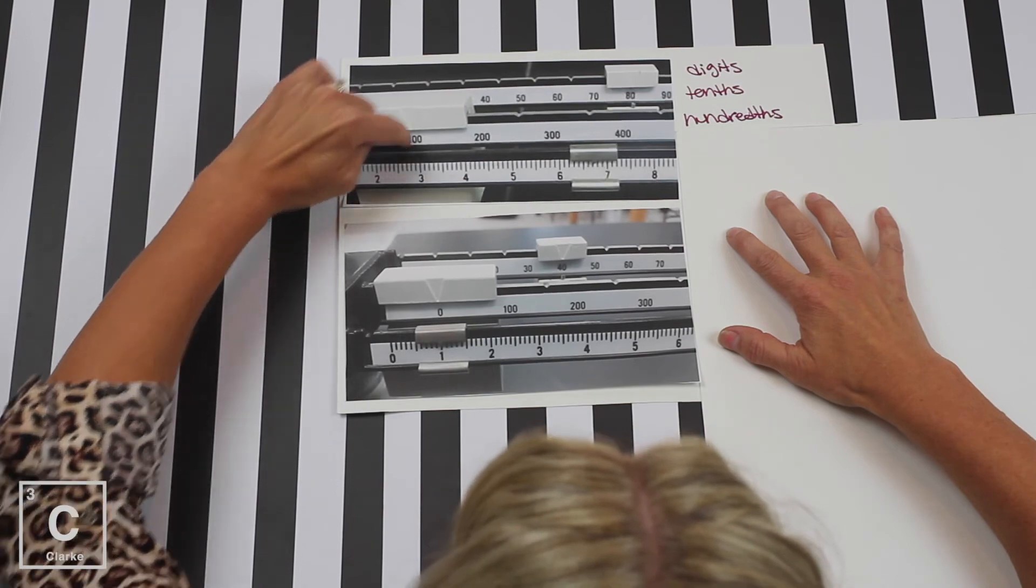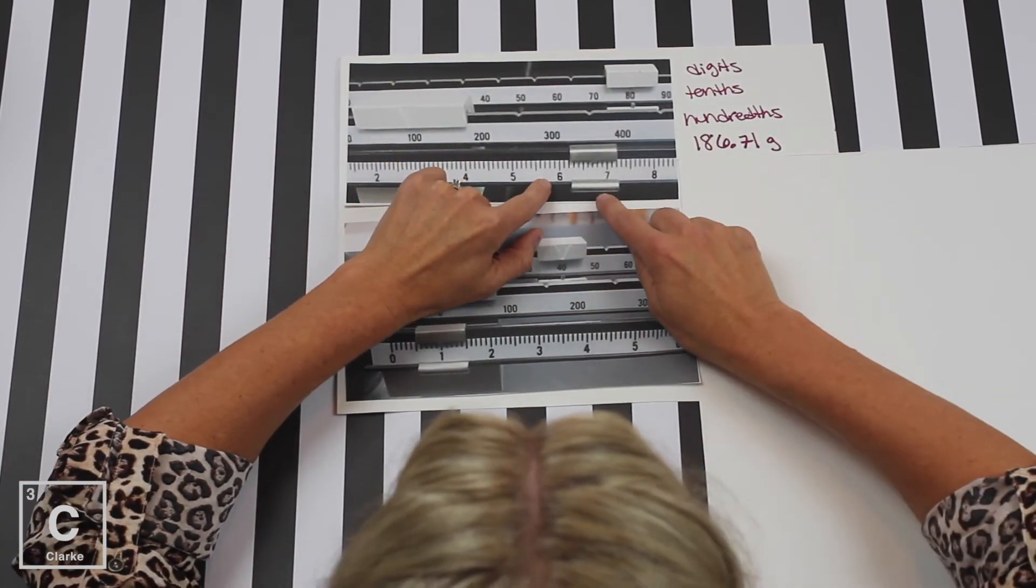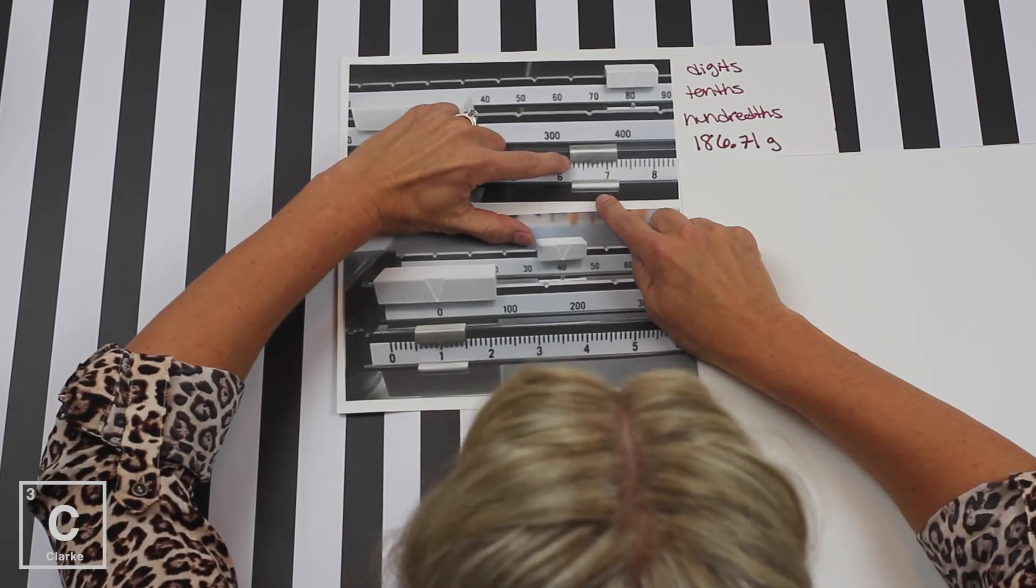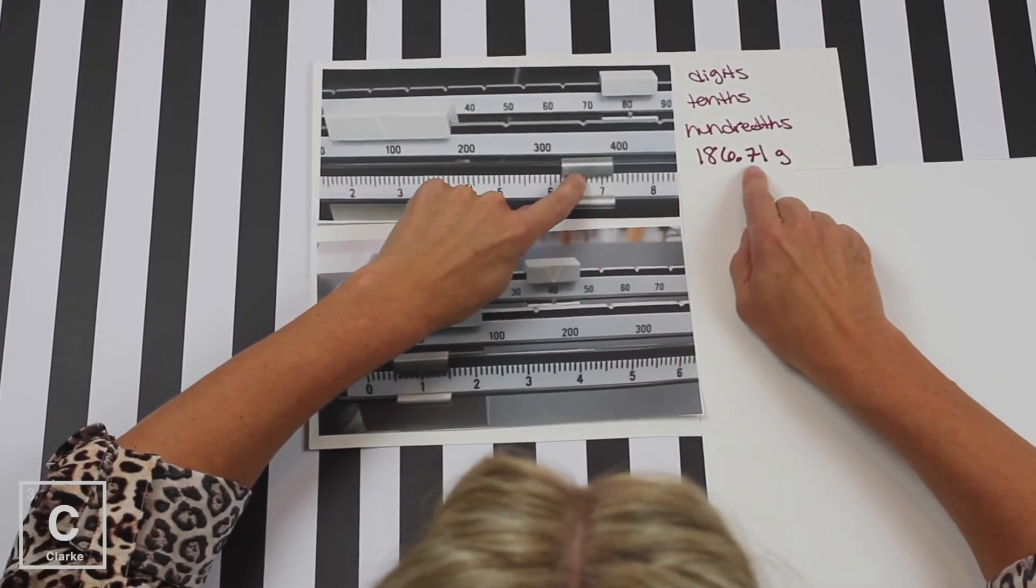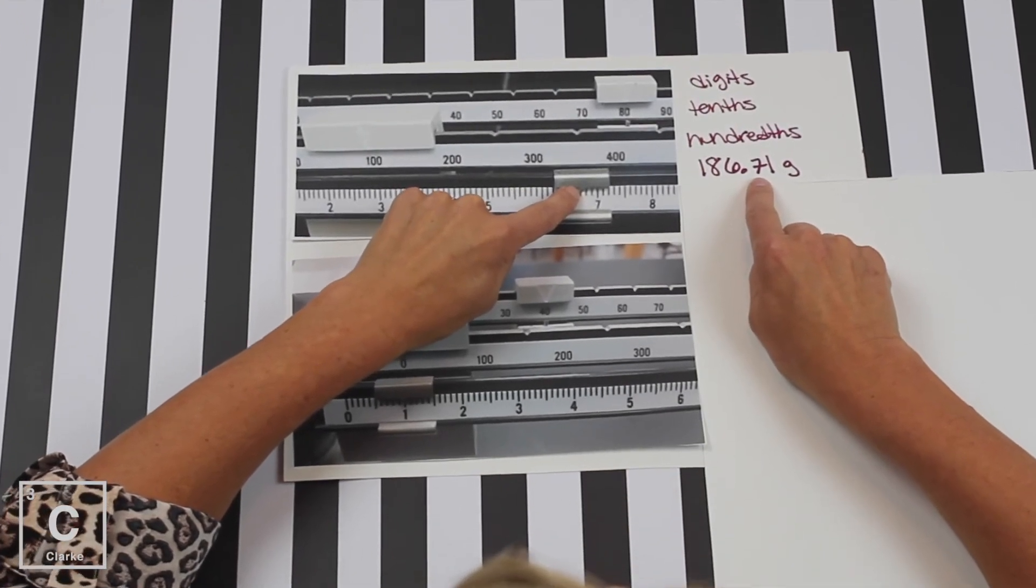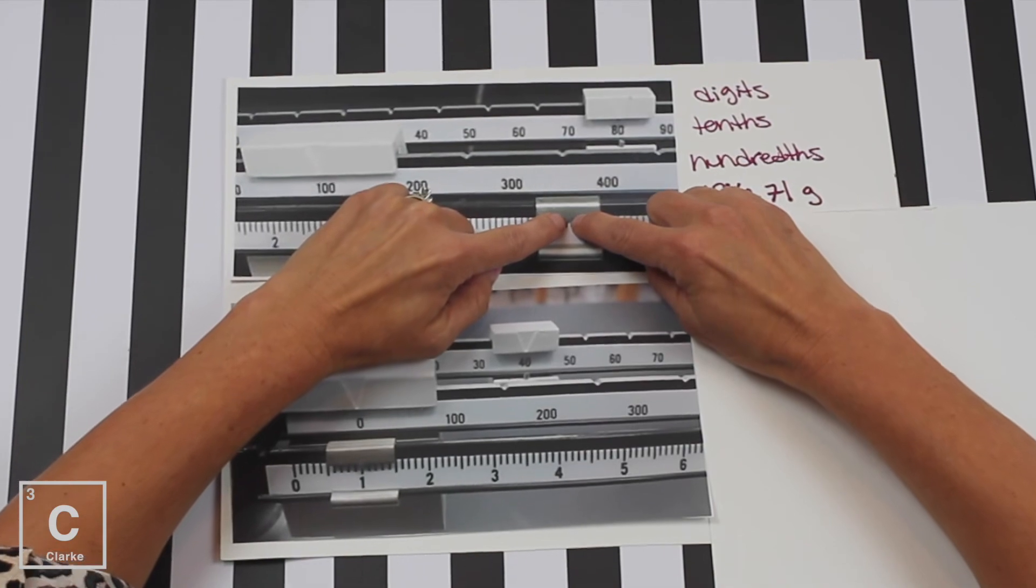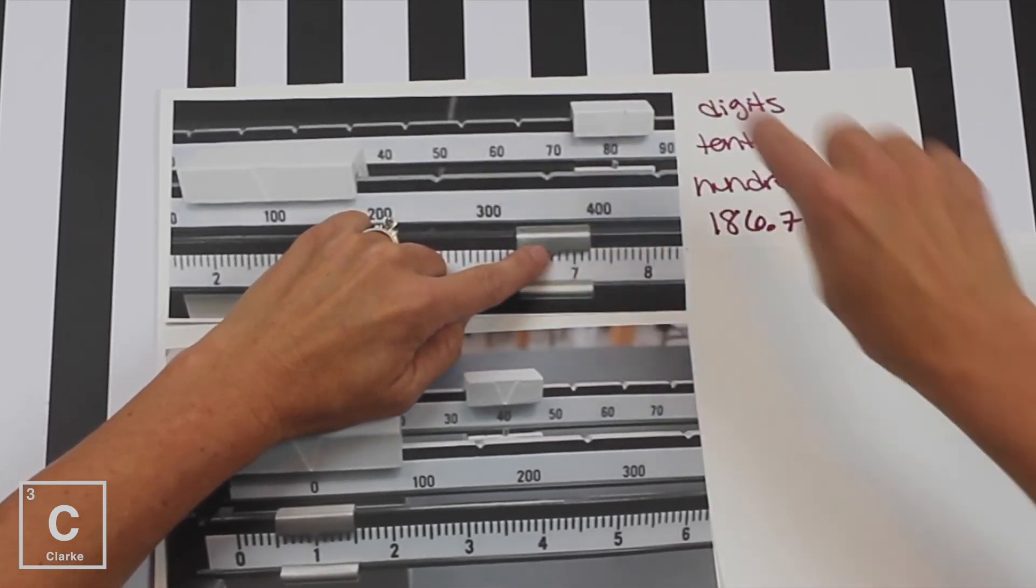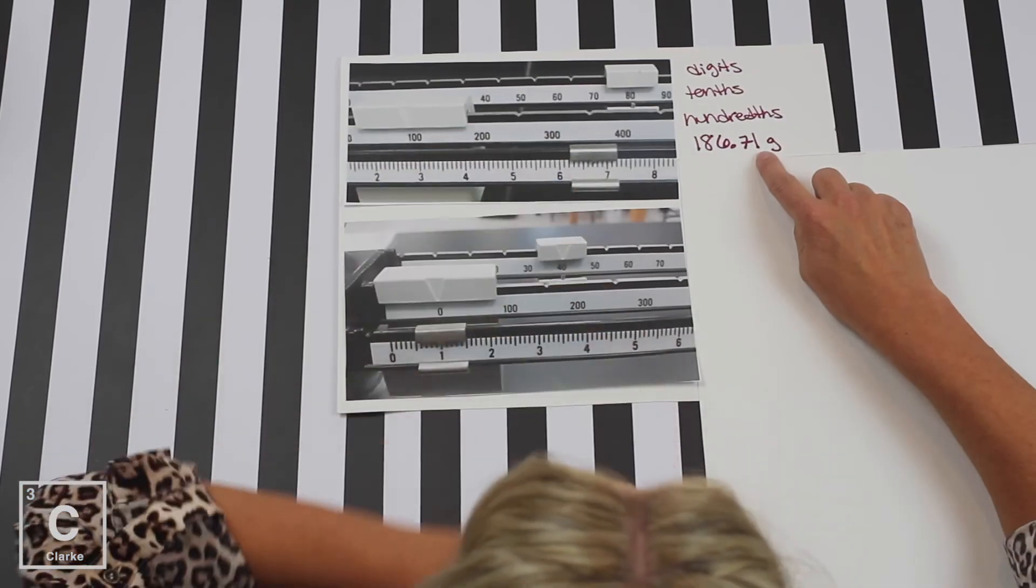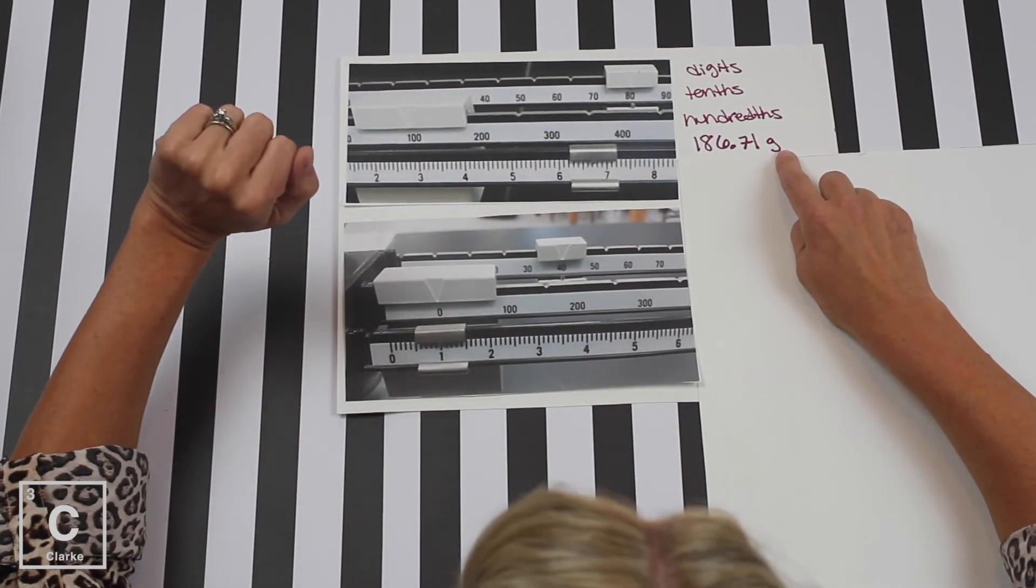So that would be 186. Now I'm going to count 1, 2, 3, 4, 5, 6, 7. So that's why I've got 186.7. That is the extent of the piece of equipment. I am noticing that the little pointy down thing right here is right past the 7. So my estimated digit is a 1. 186.71. And I went ahead and put grams because triple beam balances measure in grams.